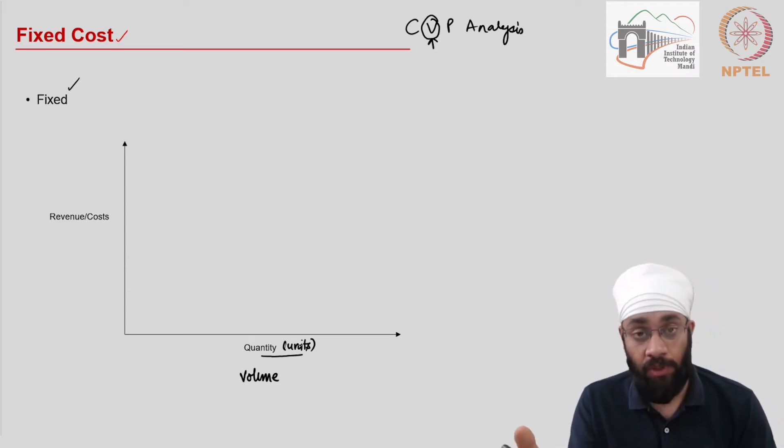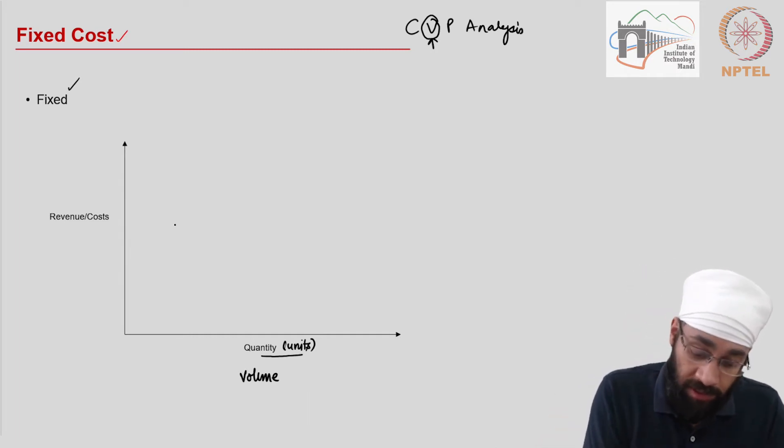Does not matter how many units you are producing, this cost is not going to change. So on the x-axis we have the units and on the y-axis you have your costs. Here I'm not depicting revenues right now. So let us say that here this is 100,000 for example. You can produce 100 units, you can produce 200, 300 and so on. Let's say you can produce up to 100,000 units.